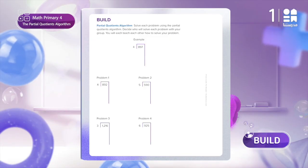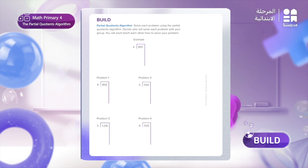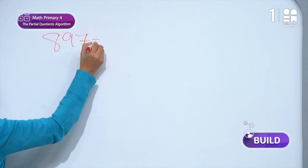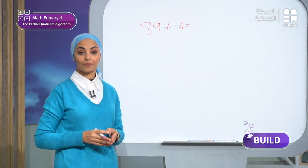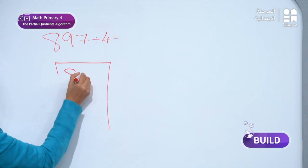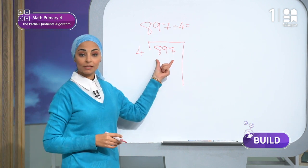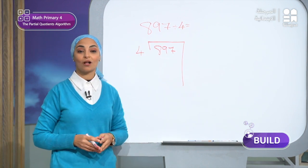The word 'partial' — you know 'part' — means we will solve the problems in parts. The example we have here is 897 divided by 4. Let's write this example all together. The dividend 897 goes under the line and the divisor 4 goes to the left of the symbol.